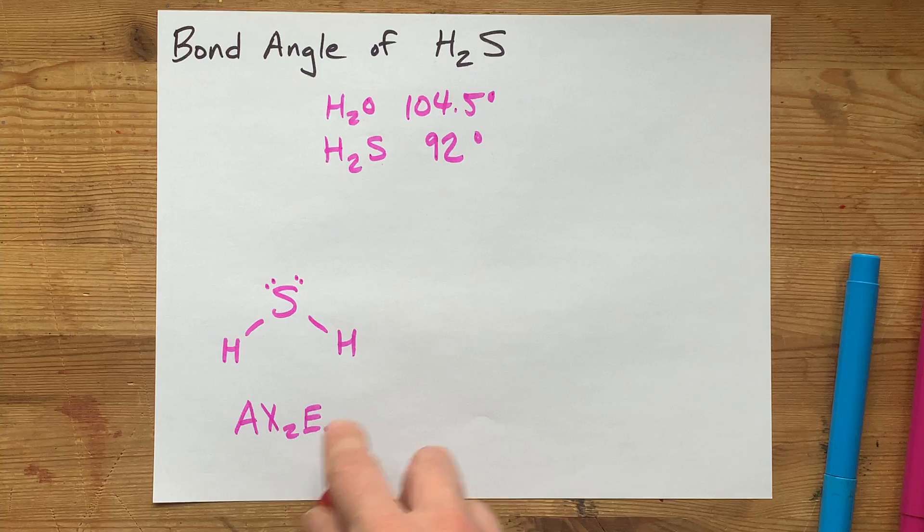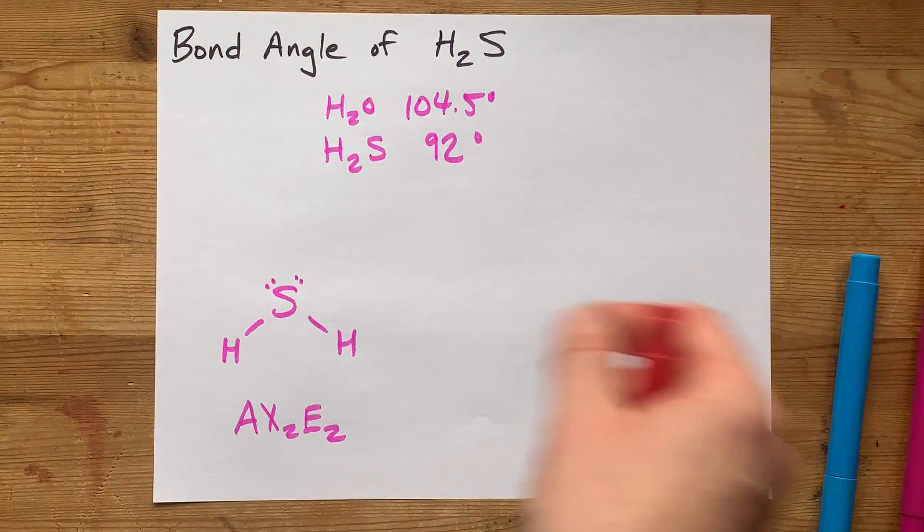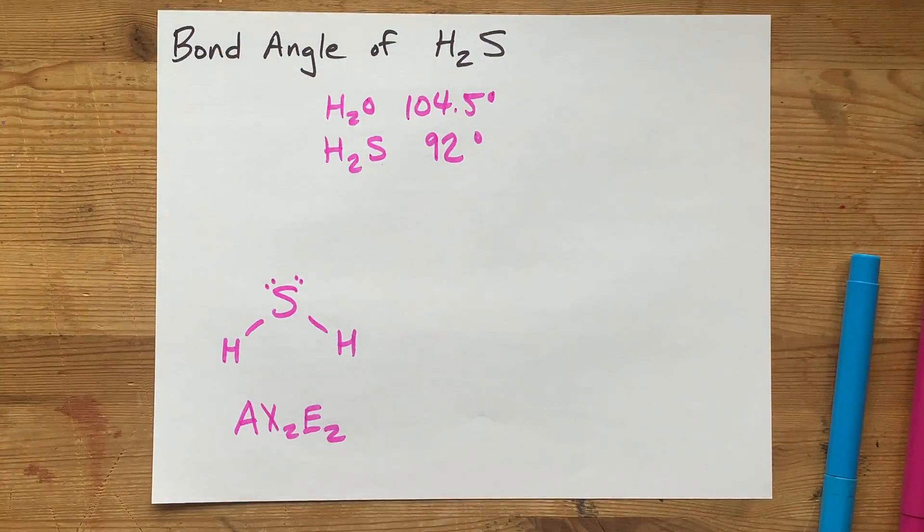That crushes the 109.5 degree bond angle for a perfectly tetrahedral molecule down to 104.5 for water.